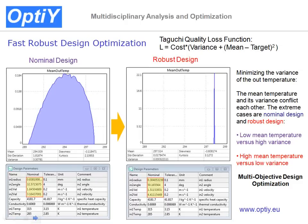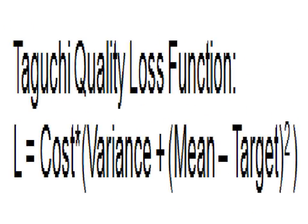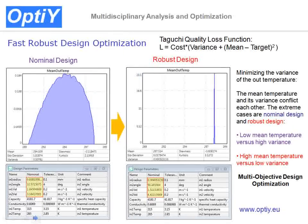If the customer specifies a target value of the output temperature, we can use the target quality loss function to get the optimal robust design point, yielding only one design point. With the robust design process, we can obtain the optimal design parameters with nominal and tolerance values, so that product quality and reliability at the early design stage can be achieved and guaranteed.